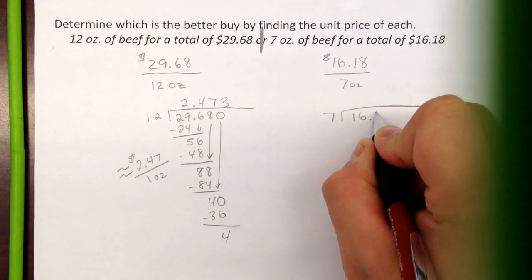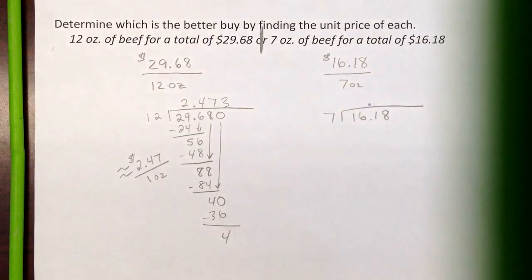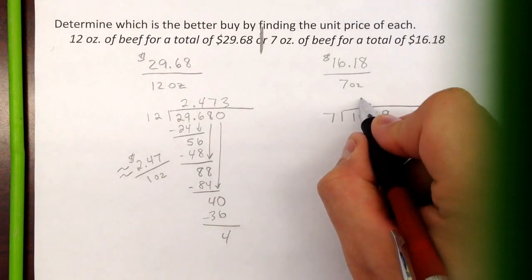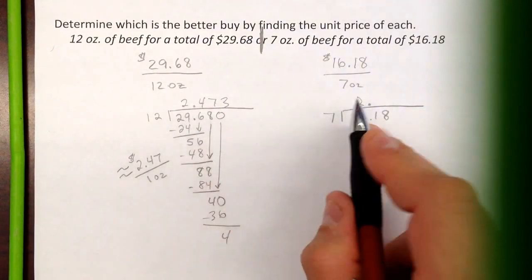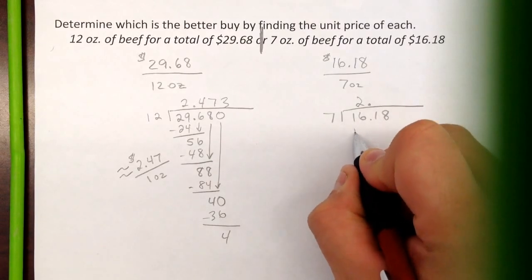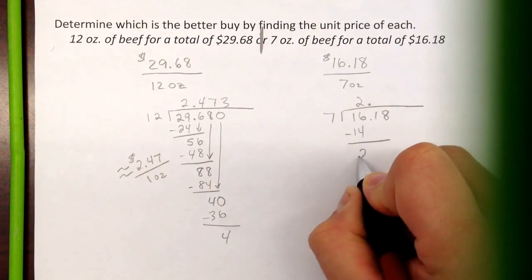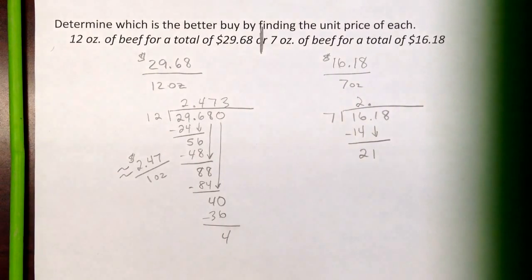7 into 16.18. Bring that decimal up. 7 into 16, definitely two times. So they're the same right now, so that's not really helping too much. And that's going to be 14. Gives us a 2. Bring the 1 down. Oh, look at that.